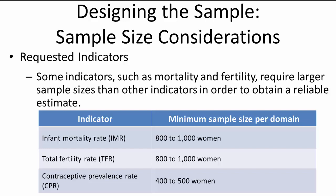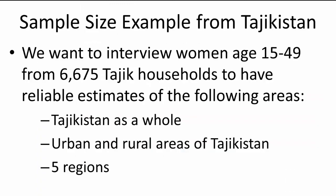For example, suppose you want to design a sample for a country with three regions representative at the regional level. In order to have accurate estimates for fertility and mortality, at minimum 800 to 1,000 women must be interviewed in each region, yielding a total sample size of 2,400 to 3,000 interviewed women. For Tajikistan, the statistical agency under the President of the Republic of Tajikistan, in coordination with DHS sampling experts, determined that 6,675 households should be interviewed to obtain reliable estimates for Tajikistan as a whole, for urban and rural areas, and for the five regions in the country. This sample size was considered both financially and logistically feasible.